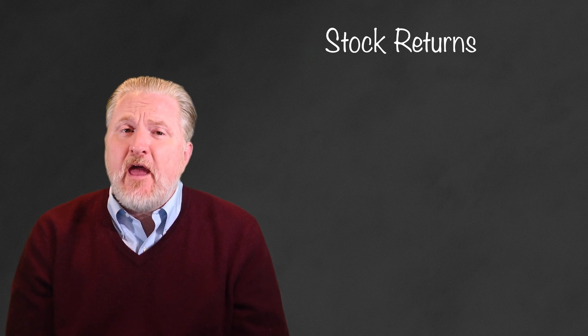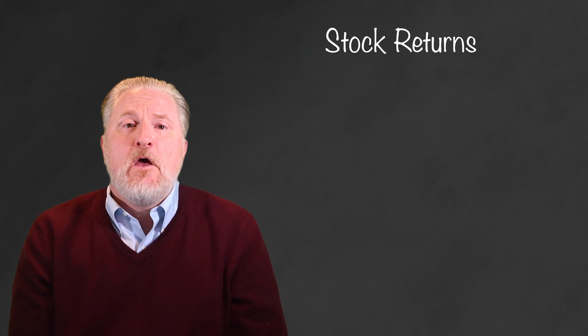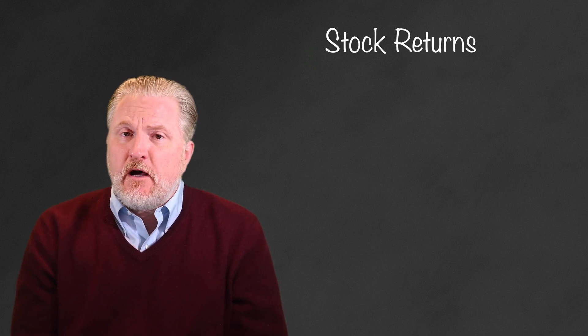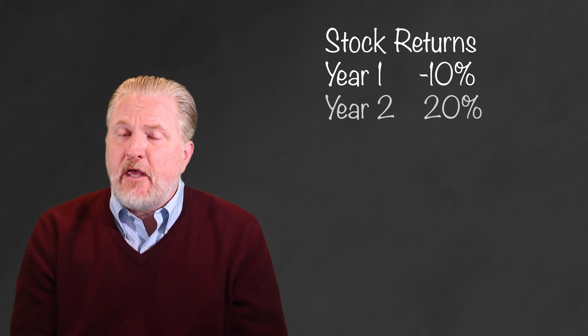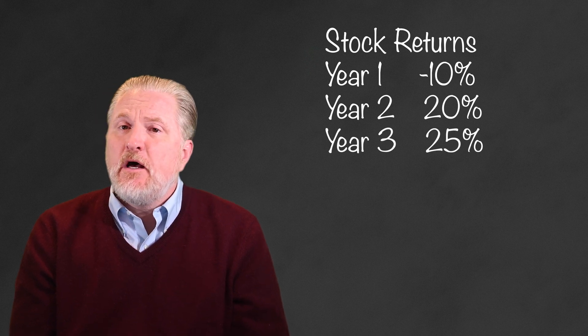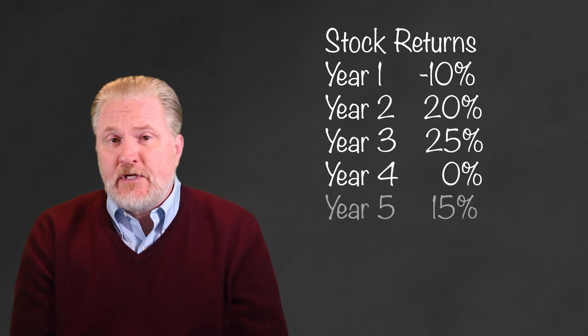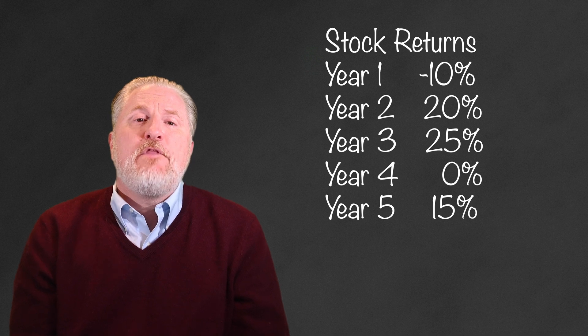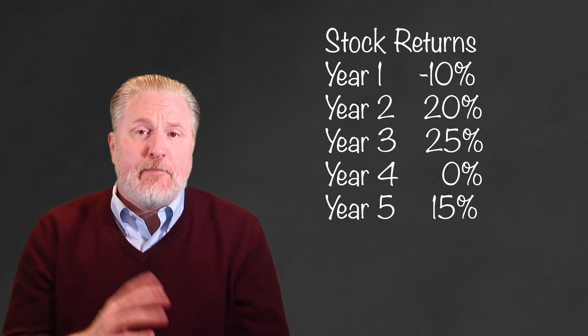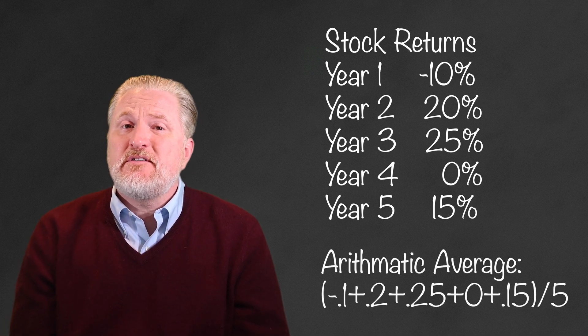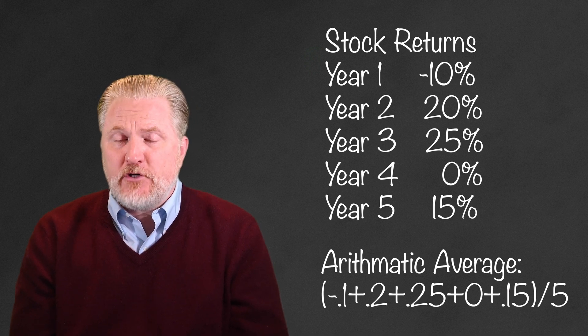Imagine we are looking at a set of stock returns in which we have measured the annual return for a particular stock for each of the last five years. We have noted the following returns over that time: a 10% loss, a 20% gain, a 25% gain, a 0% gain, and a 15% gain in order. The arithmetic average, denoted by x bar, of those returns is simply the sum of those values divided by the number of observations.